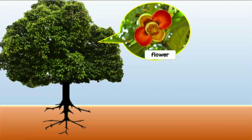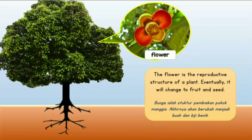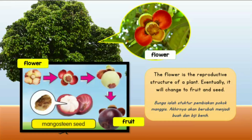Now let's look at the flower. What is the importance of the flower? The flower is the reproductive structure of a plant. Eventually it will change to fruit and seed. Bunga ialah struktur pembiakan pokok manggis. Akhirnya akan berubah menjadi buah dan biji benih.